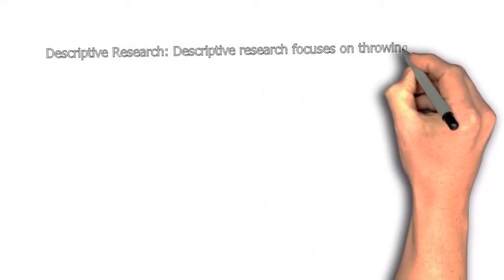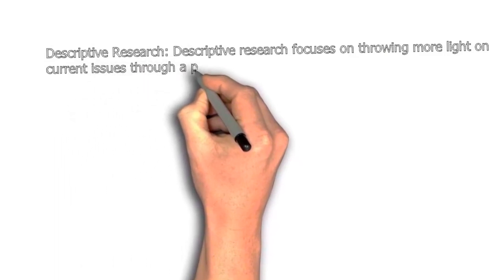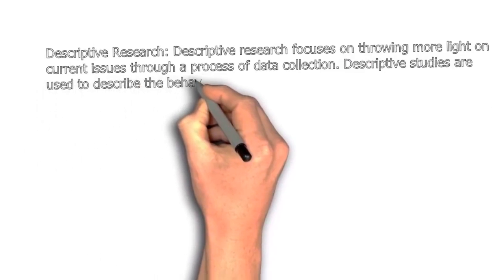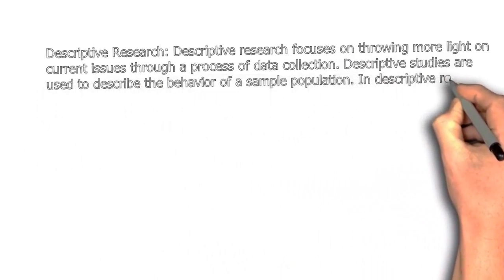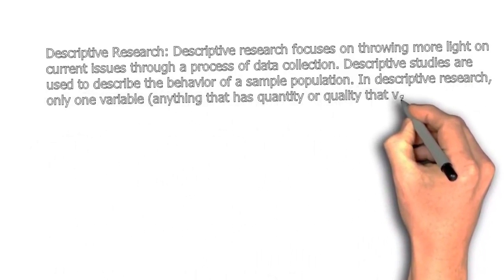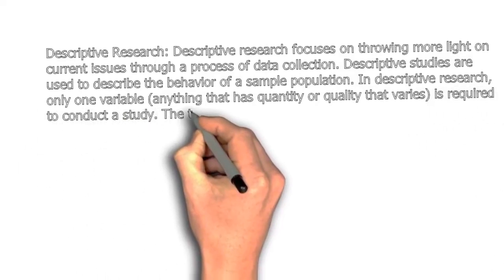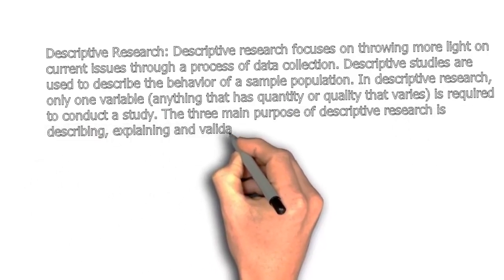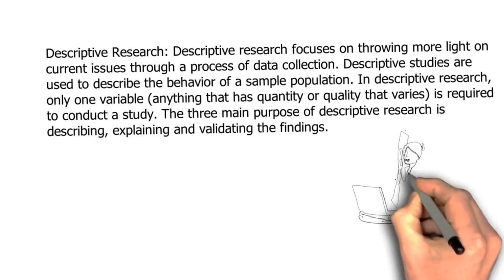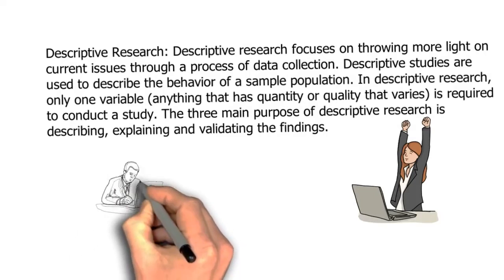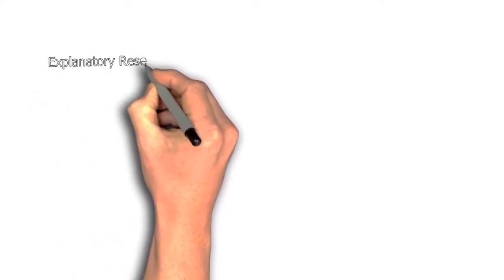Another one is descriptive research. Descriptive research focuses on throwing more light on a current issue through a process of data collection. Descriptive studies are used to describe the behavior of a sample population. In descriptive research, only one variable—anything that has quantity or quality that varies—is required to conduct a study. The three main purposes of descriptive research are describing, explaining, and validating the findings. For example, we can conduct a survey on customer satisfaction.